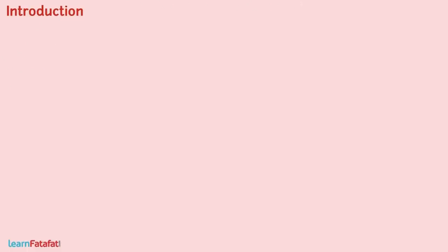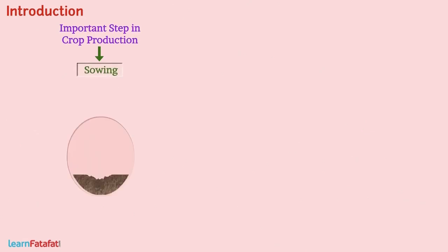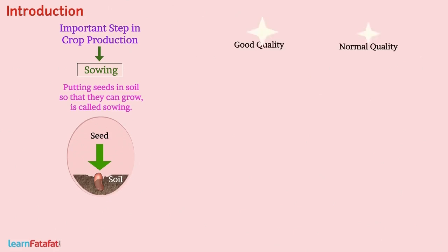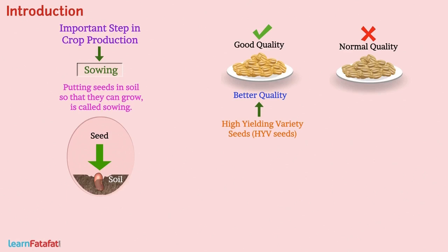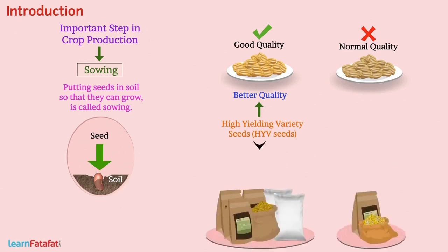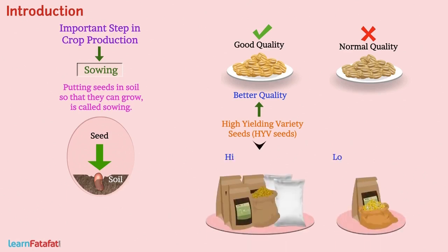Sowing. The most important step in crop production is sowing — putting seeds in the soil so that they can grow. For sowing, farmers select good quality seeds, which are clean and healthy seeds of good variety. High Yielding Variety seeds (HYV seeds) are of better quality than normal seeds and give higher yield, that is, higher agricultural produce.